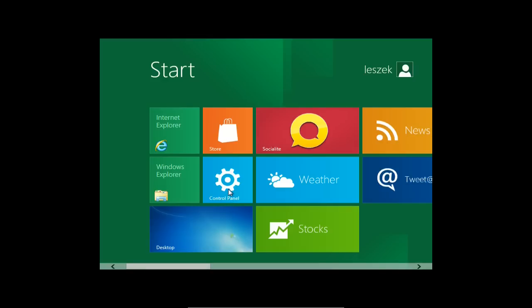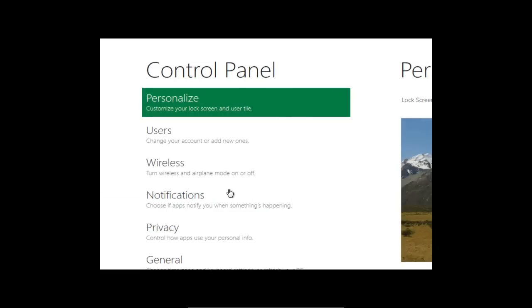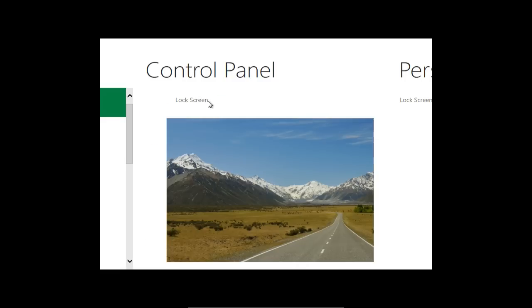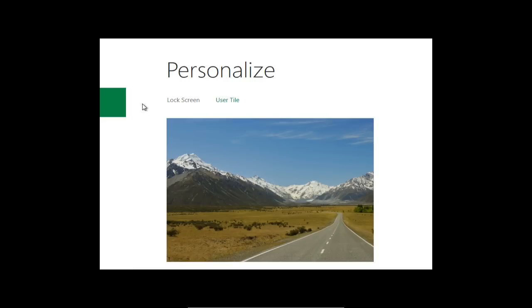Gehen wir mal in das Control Panel. Das ist auch die einzige Applikation, die ich als Kachel installiert habe, weil ich die kleinere ISO-Datei heruntergeladen habe. Da muss es wohl extra Programme geben. Hier kann ich was personalisieren. Ihr seht wieder dieses Interface, das halb abgeschnitten ist - das erinnert stark an das mobile Interface von Windows Phone 7. Ich kann hier den Lockscreen einrichten und viele verschiedene Wallpaper auswählen sowie eine App hinzufügen, die auf dem Lockscreen angezeigt werden soll.